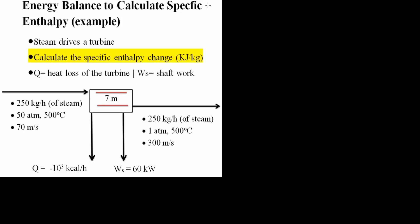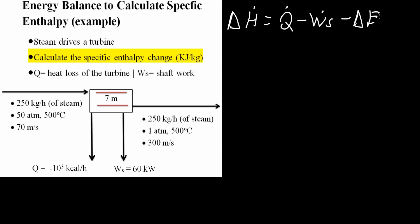First, we will write an energy balance equation. Delta H is equal to Q minus WS minus the kinetic energy minus the potential energy.